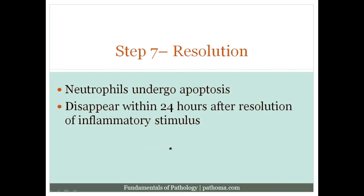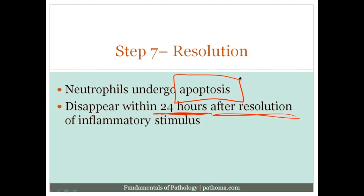The final stage of neutrophil activity is resolution. Once the infection is destroyed, within 24 hours the neutrophils will disappear. It's important for examinations to know how neutrophils disappear: the neutrophils die within the tissue via apoptosis. Recall that pus is basically dead neutrophils within fluid. Neutrophils undergo apoptosis — that's the high-yield way by which they resolve themselves within the tissue.